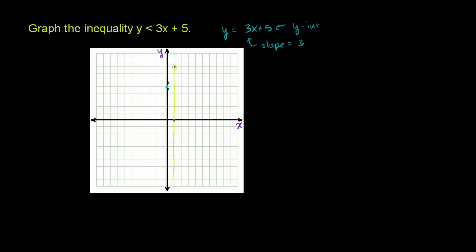And the slope is 3. So if you go over to the 1, you go up 3. Let me do that in that darker purple color. So it'll look like this. It will look like that.